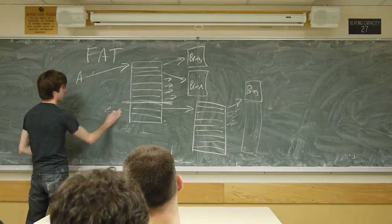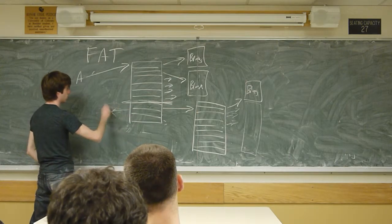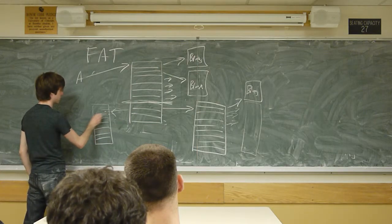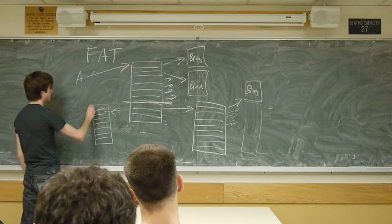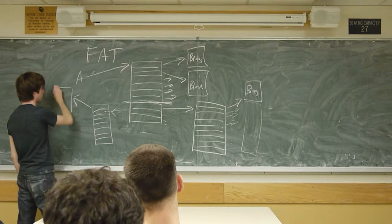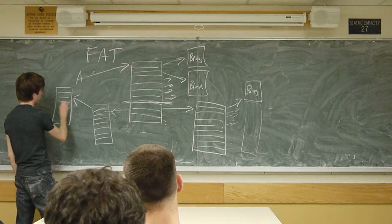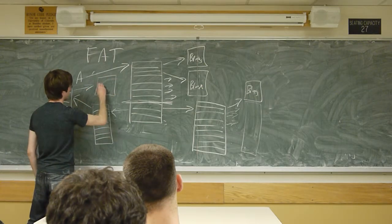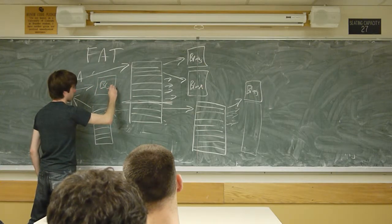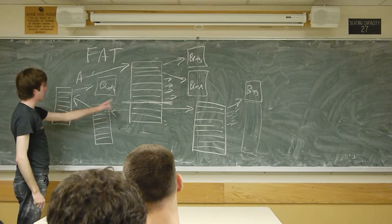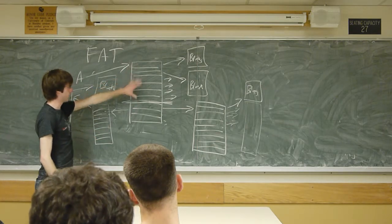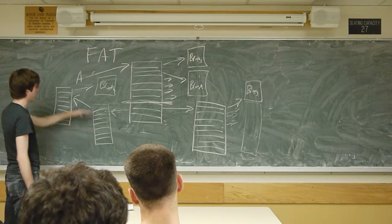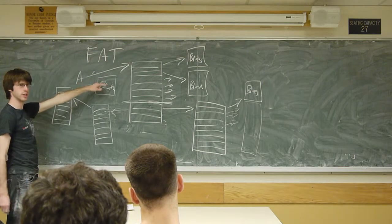If the file gets bigger than that, then what we're going to do is we're going to go to our first singly indirect block. So this is going to store a pointer to another iNode that also has ten entries, where all ten of these entries then point to blocks. So from this block, we can essentially, so now we have our first seven direct blocks, and now we have ten singly indirect blocks. So we follow one level of indirection, then we get ten direct blocks. These are all now direct blocks, so on and so forth.